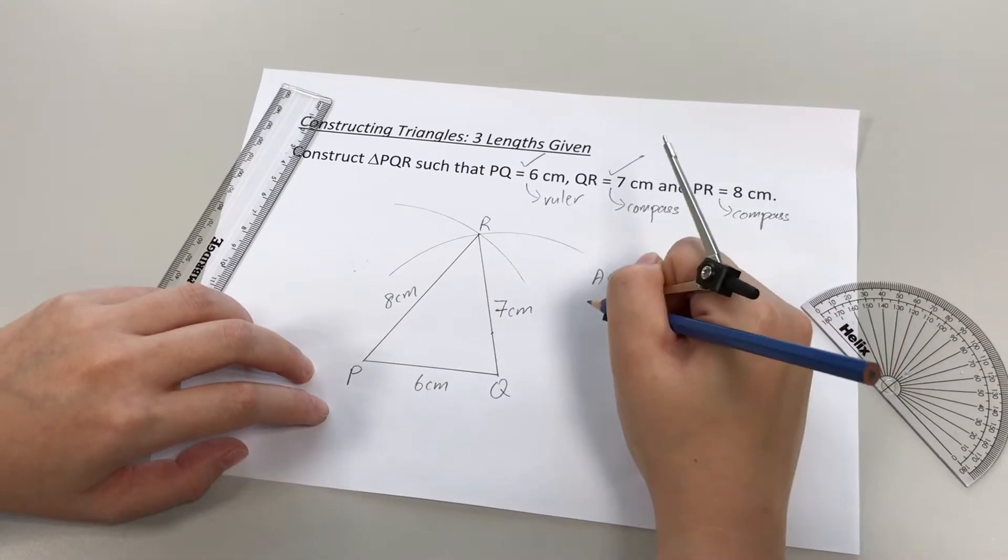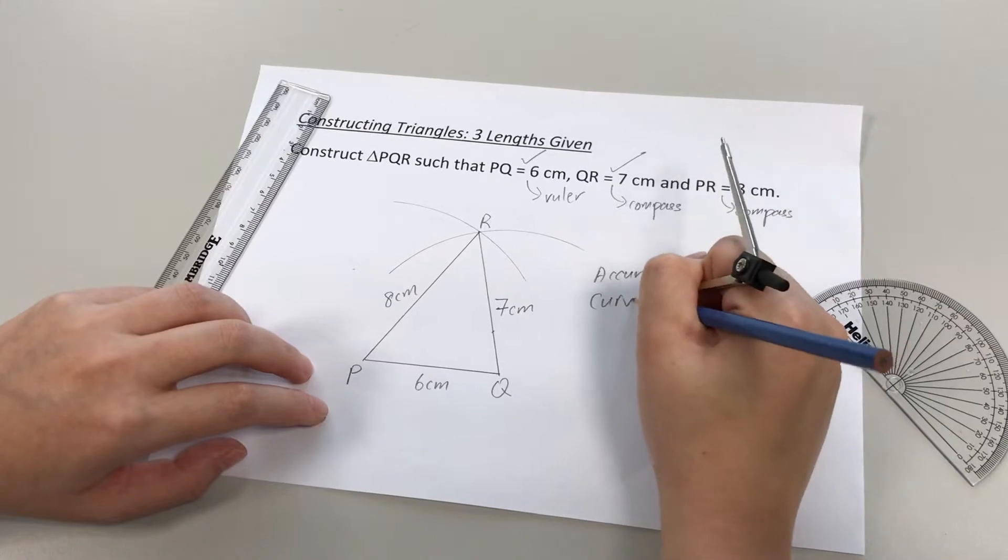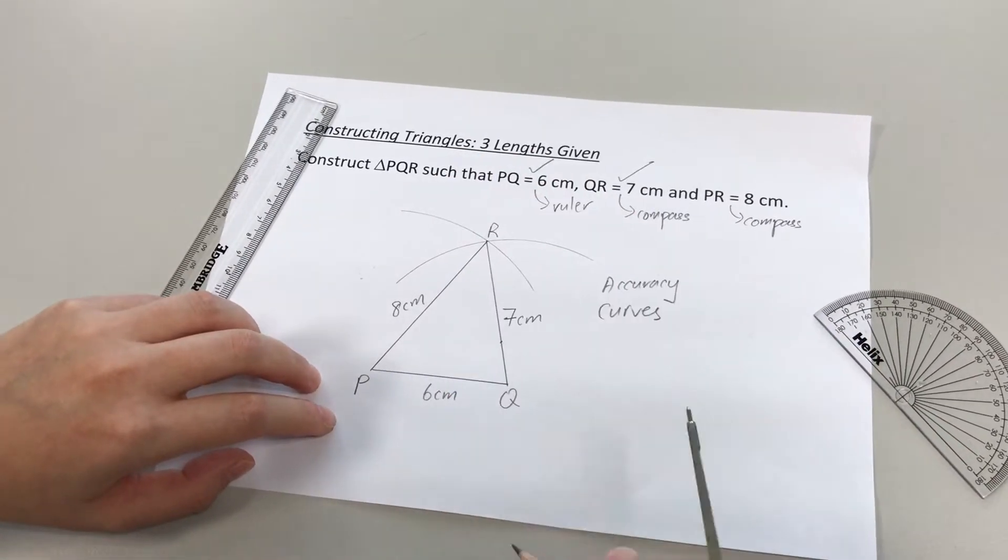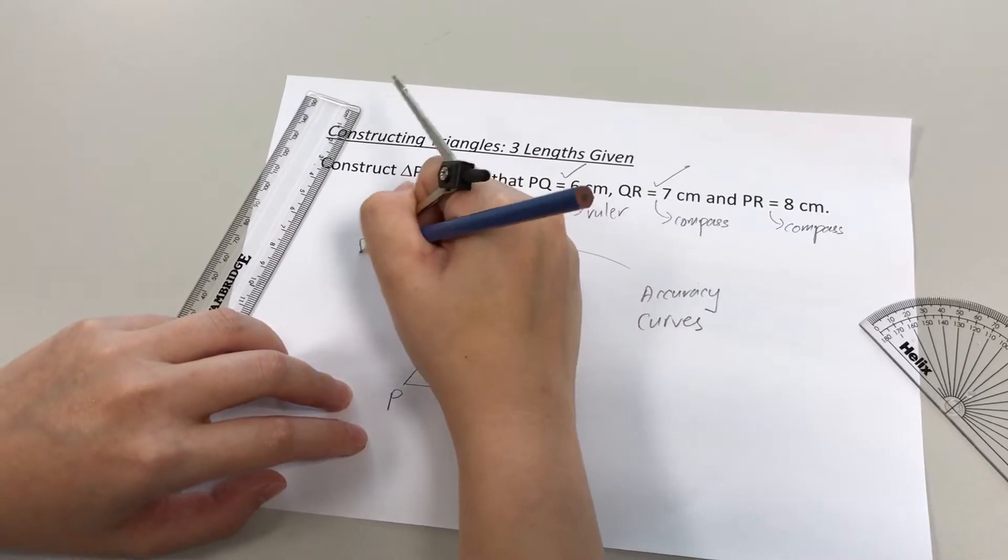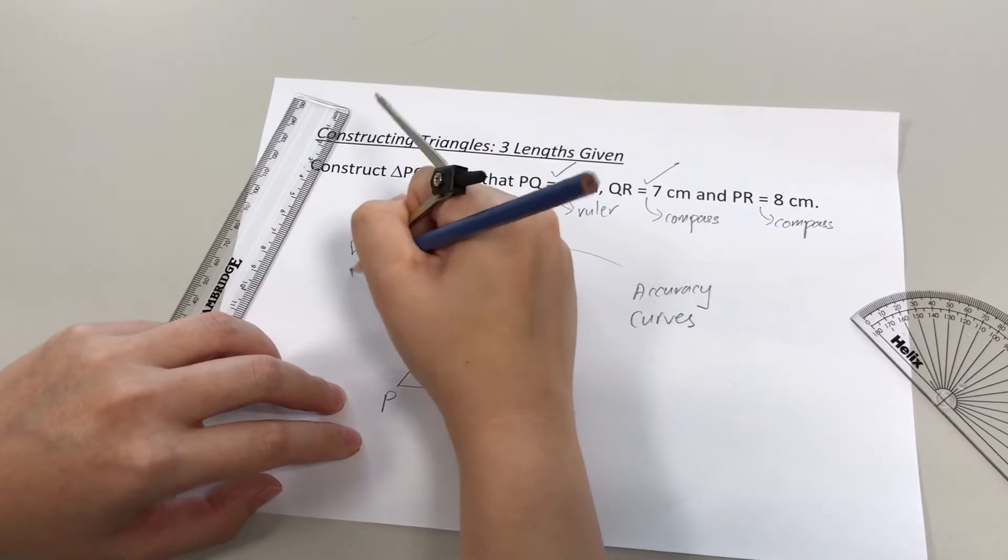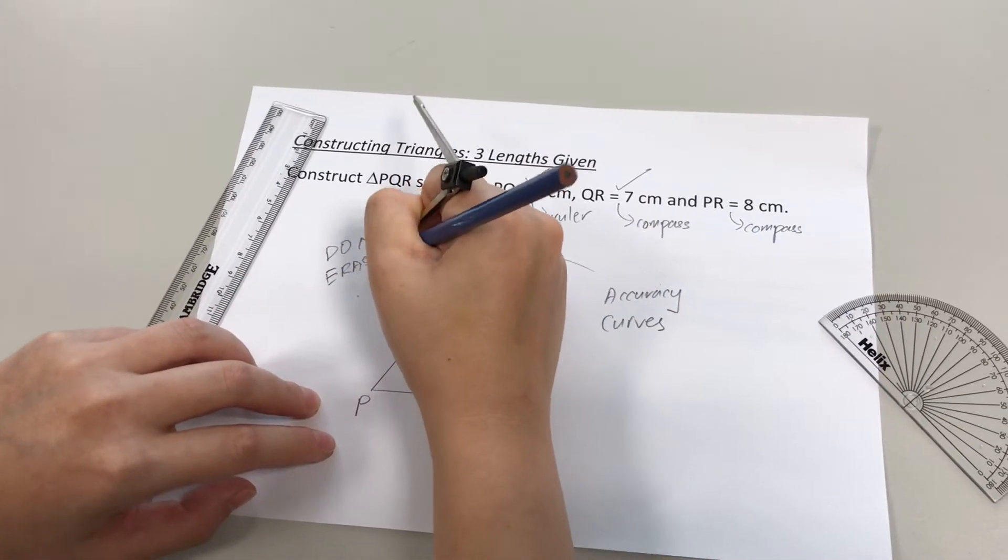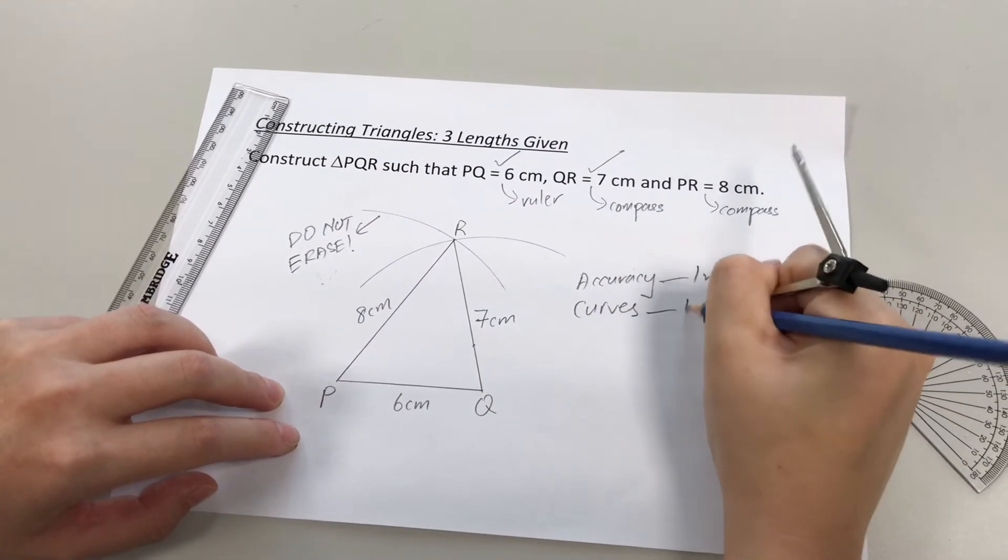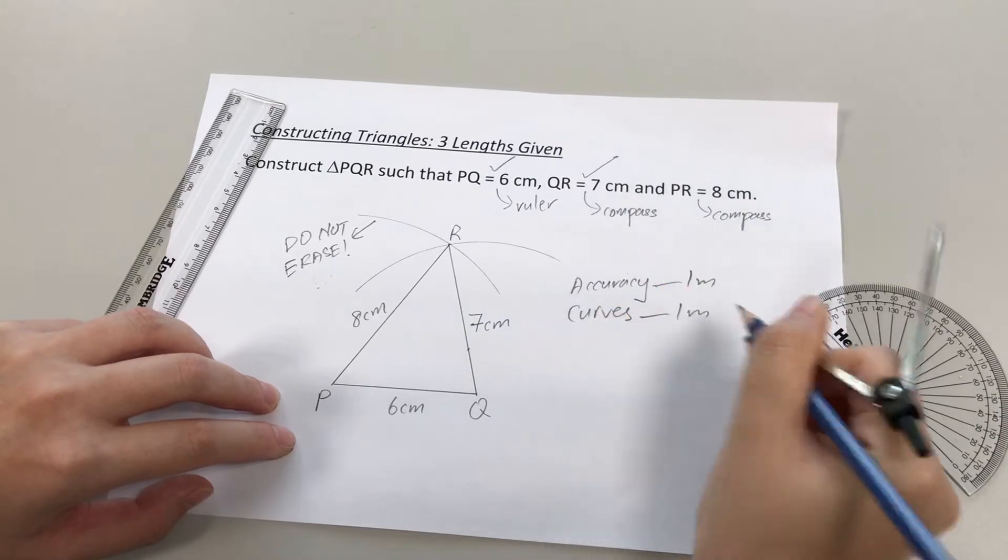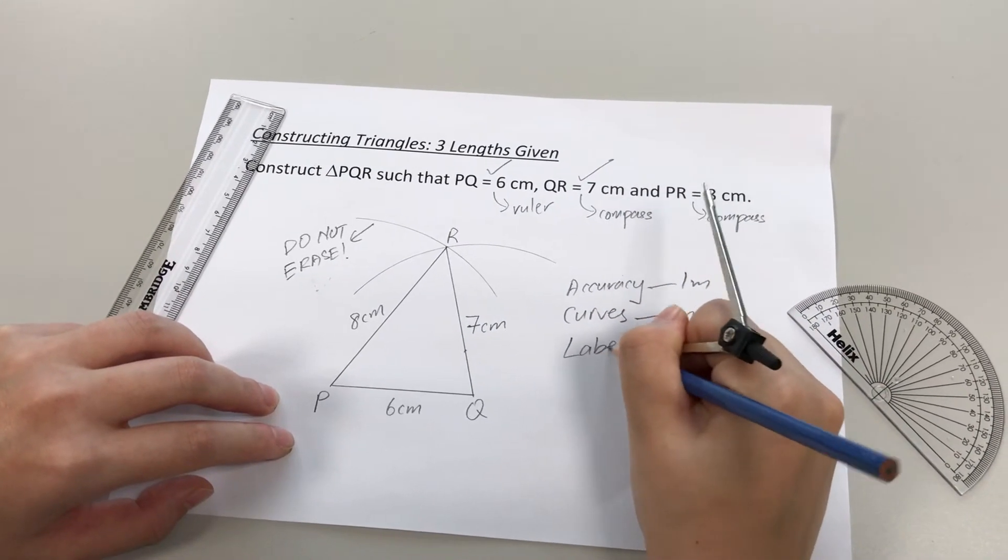Okay, you are given marks for your curves, okay, which are these two curves that you have drawn using your compass. So it's important that for these curves, you do not erase them. All right, because this will count for one mark. Accuracy, one mark for curves. And of course, the third mark you are given is for labels.